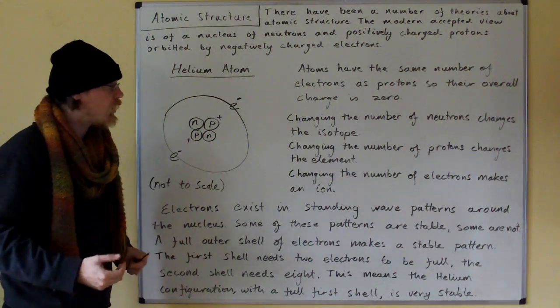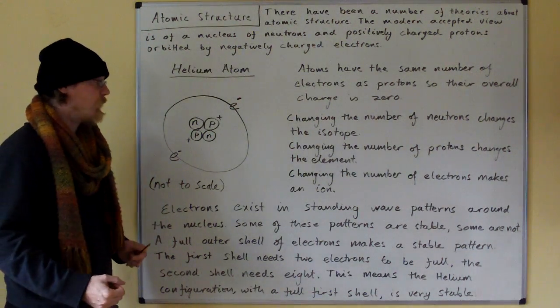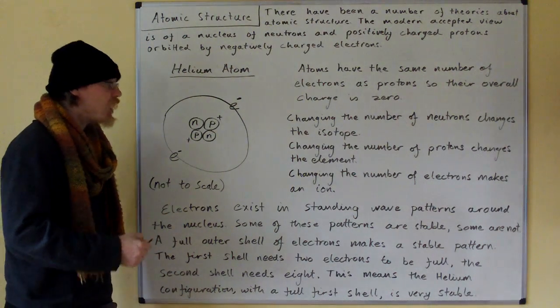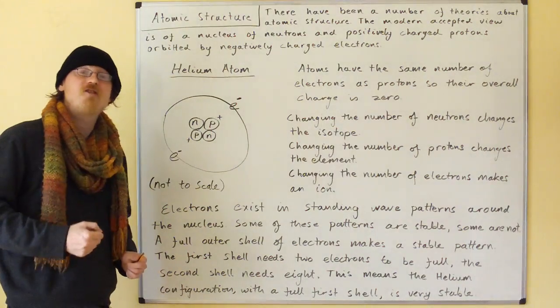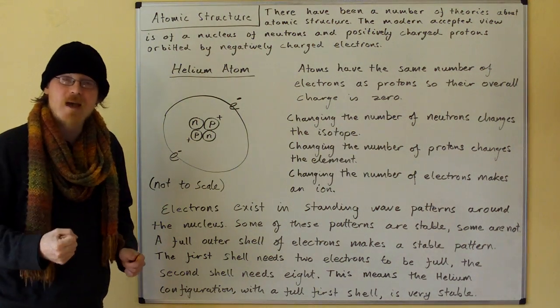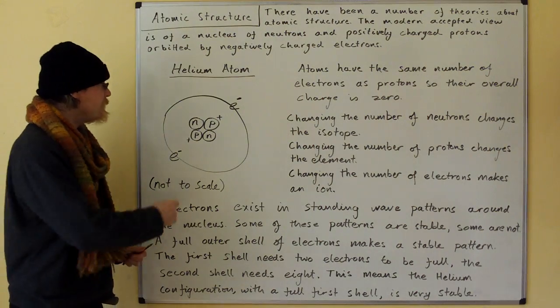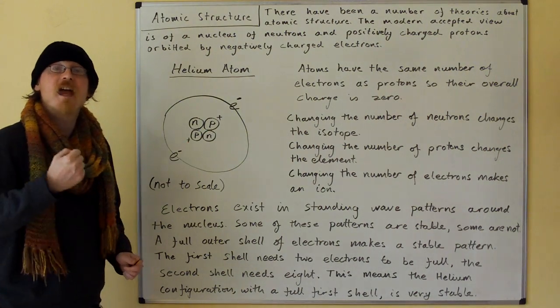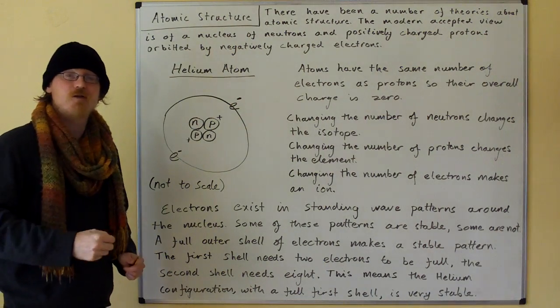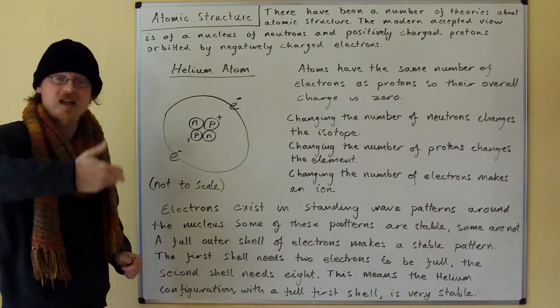Changing the number of neutrons changes the isotope, and we'll learn more about that when we do radioactivity. Changing the number of protons changes the element. Hydrogen has one proton, that makes it hydrogen. Helium has two protons, that makes it helium. Lithium has three protons, that makes it lithium, and so on.